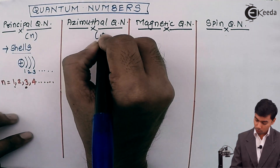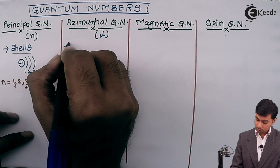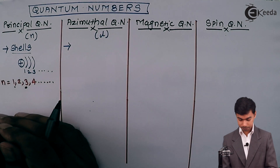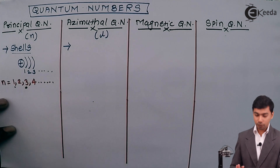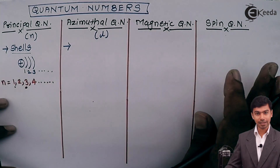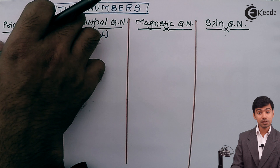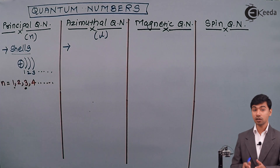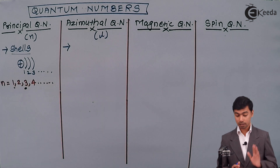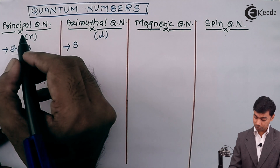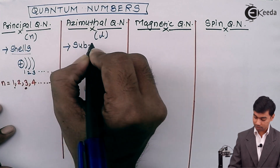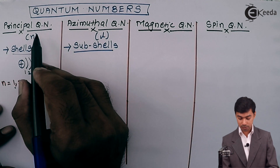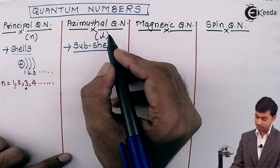Now let us move to the azimuthal quantum number, denoted by small l. As we move further inside an atom beyond the shell level, we reach subshells. The principal quantum number gives information about shells, so the azimuthal quantum number gives information about subshells — the inner part of the shell. The notation for the principal quantum number is small n, and for the azimuthal quantum number it is small l.